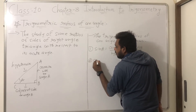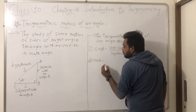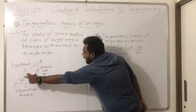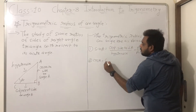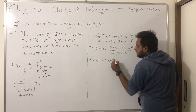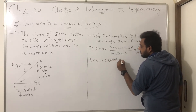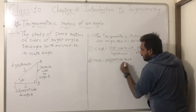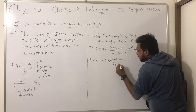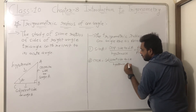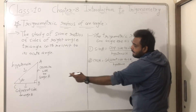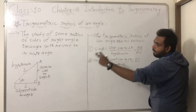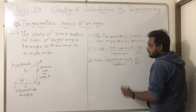The second is cos A. Cos A means adjacent side to angle A divided by hypotenuse. The adjacent side to angle A is BC, and the hypotenuse side is AC. So cos A equals BC by AC.